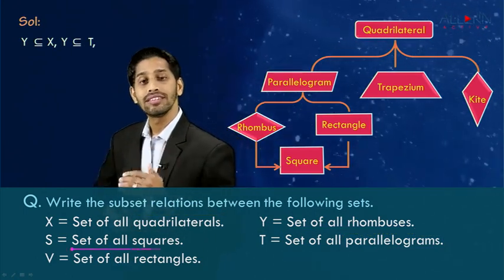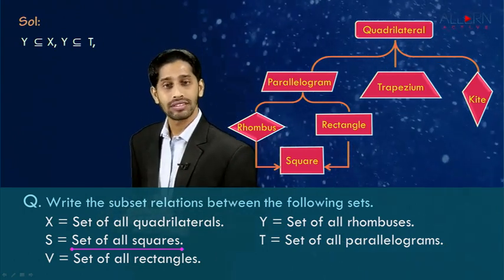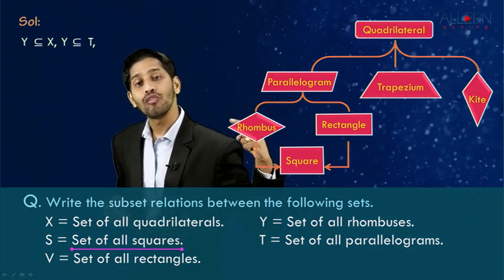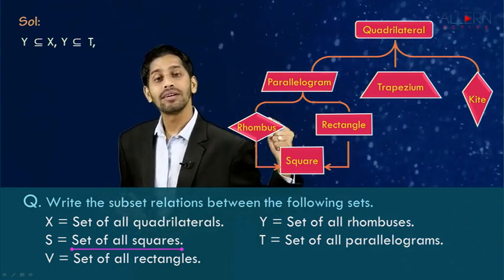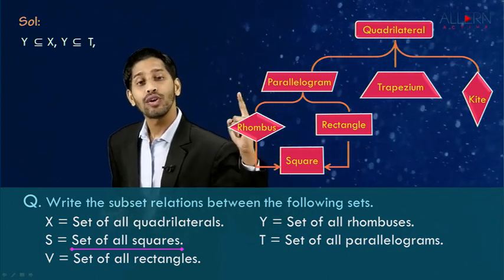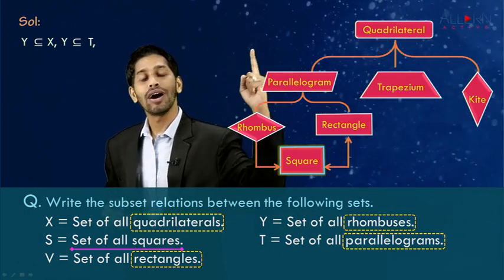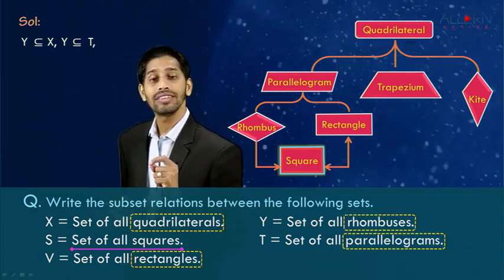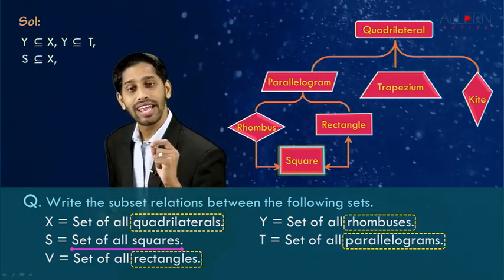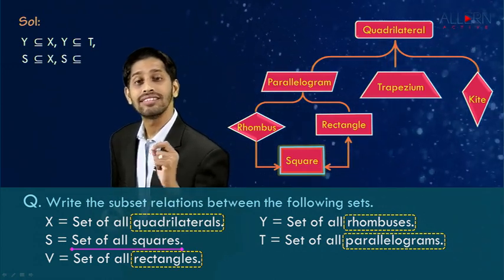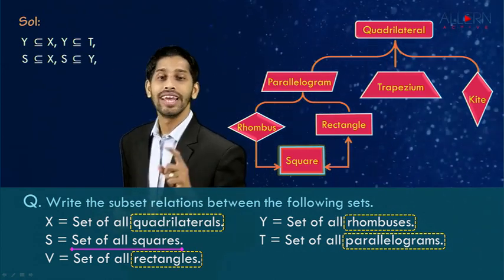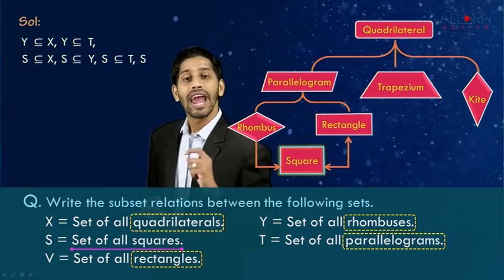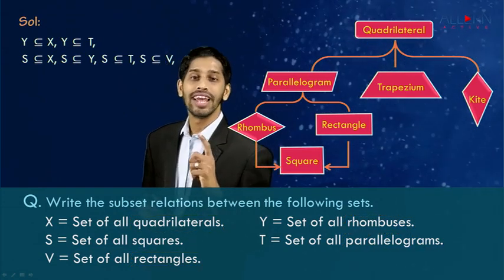Now for set S, the set of all squares. Observing the diagrammatic representation, square is a part of rhombus, square is a part of rectangle, square is a part of parallelogram, as well as square is a part of quadrilateral. So we say that S is a subset of X (quadrilateral), S is a subset of Y (rhombus), S is a subset of T (parallelogram), and S is a subset of V (rectangle).